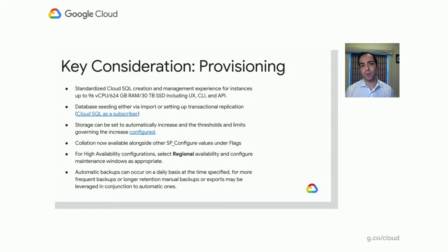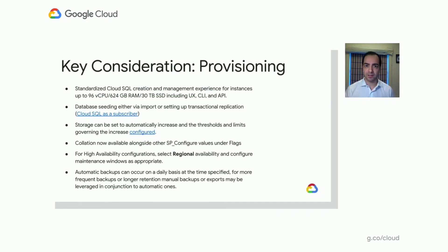For high availability, it's important to note that to really get the most out of Cloud SQL and take advantage of our 3.5-nine SLA, you'll need to select a regional availability configuration and pay special attention to maintenance windows. Cloud SQL will do its best to minimize disruption and have maintenance events happen as quickly and as infrequently as makes sense, but our first priority is always making sure the service is both secure and highly available.